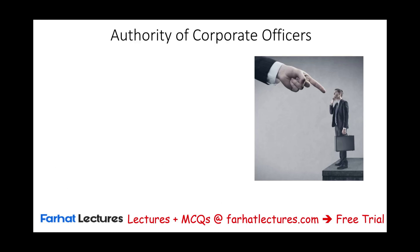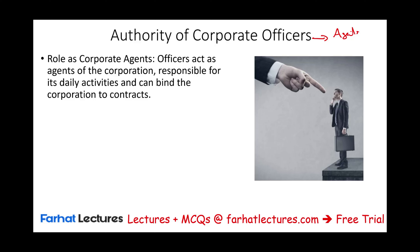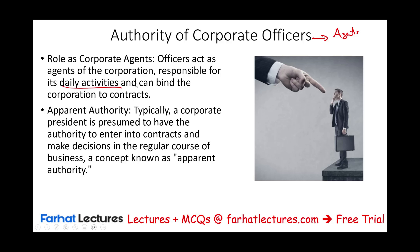Regarding the authority of corporate officers — remember, those are agents of the company. They act on behalf of the company, are responsible for its daily activities, and can bind the corporation to any contract they sign. They have actual authority and apparent authority. For example, a president is presumed to have authority to enter contracts and make decisions in the regular course of business.